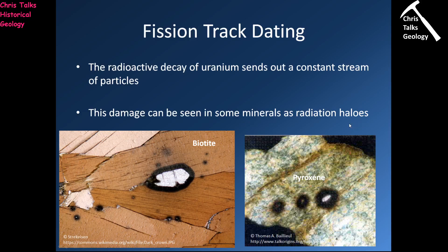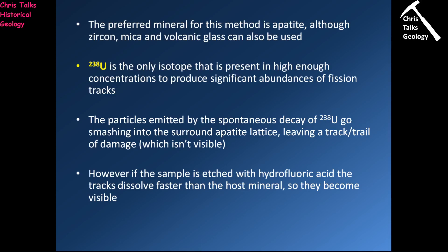We can use this process of damage to actually help us date a mineral, because radioactive decay is a constant. All we have to do is quantify the damage done, and then work out how long it would have taken for that much damage to occur. For fission track dating, the preferred mineral is apatite, although you can also use zircon, mica, or volcanic glass.